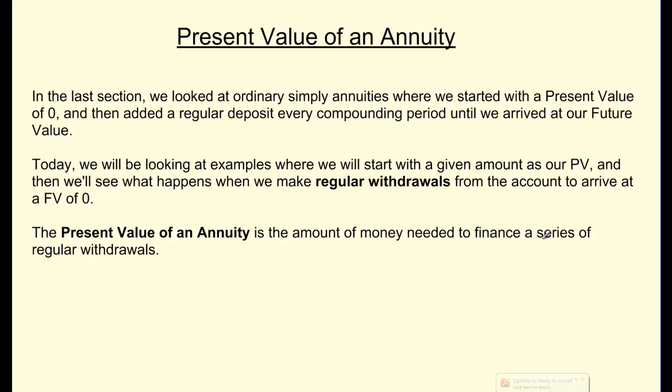We've now come to the very last lesson in our final unit of our course. In this lesson we're going to look at what's called the present value of a simple annuity. In the last lesson we looked at what ordinary simple annuities were, which are compound interest questions where you have regular payments that you put into an account. A simple annuity is where you start with a present value of zero and then add a regular deposit every compounding period until you get to your future value.